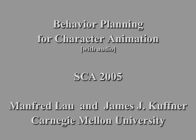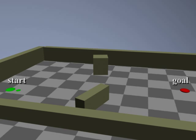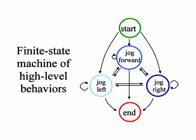This paper explores a behavior planning approach to automatically generate realistic motions for animated characters. Our system takes as input information about an environment, a starting position and orientation, a goal location, and a finite state machine of high-level behaviors.